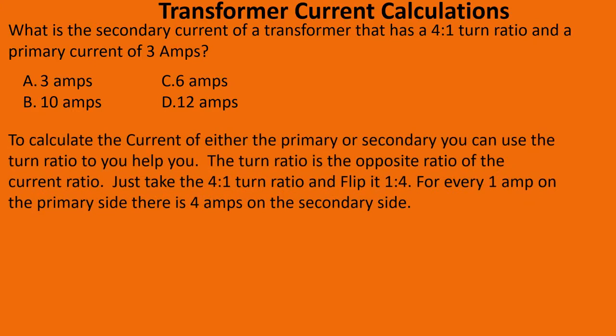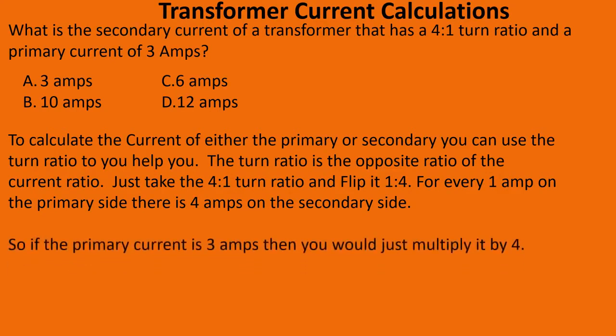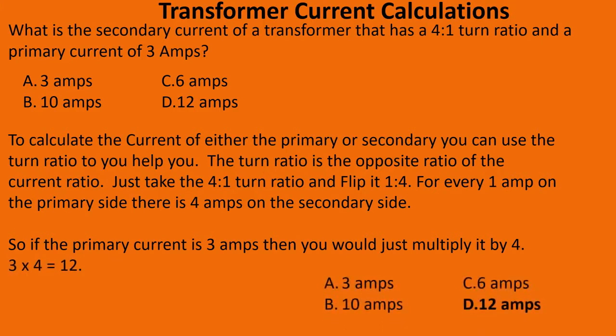To calculate the current of either the primary or secondary, you can use the turn ratio to help you. The turn ratio is the opposite ratio of the current ratio. Just take the four-to-one turn ratio, flip it, and now you have a one-to-four current ratio. For every one amp on the primary, there are four amps on the secondary. So if the primary current is three amps, multiply it by four: three times four equals 12. We're gonna select D.